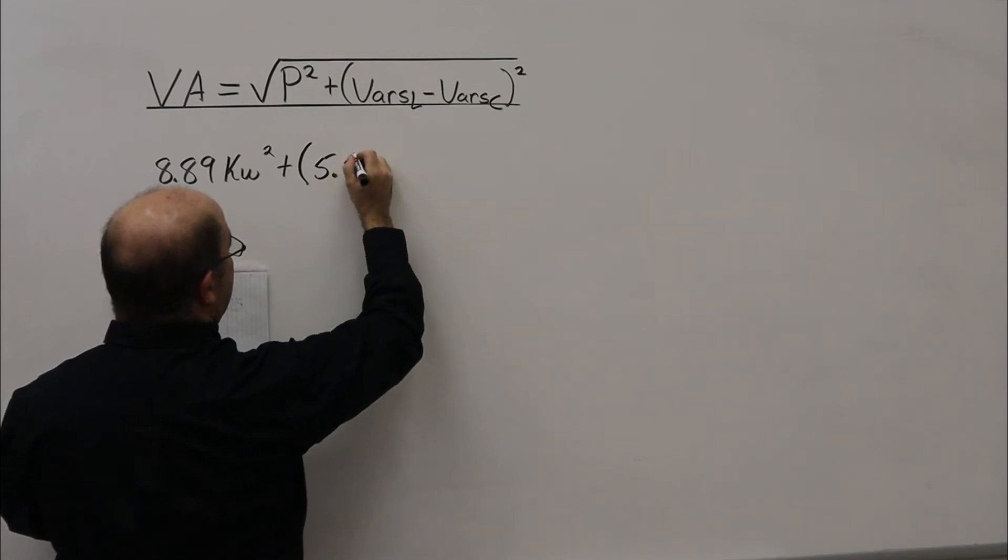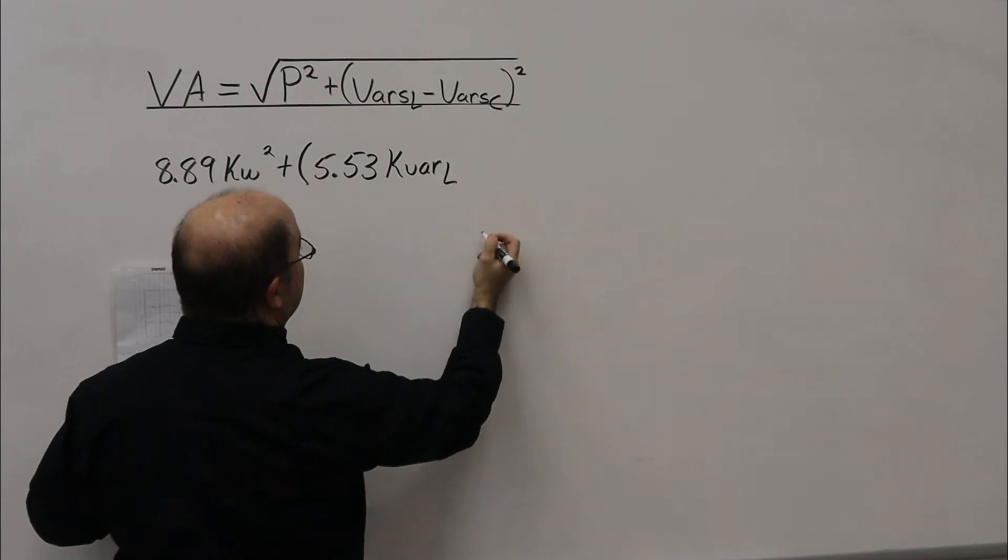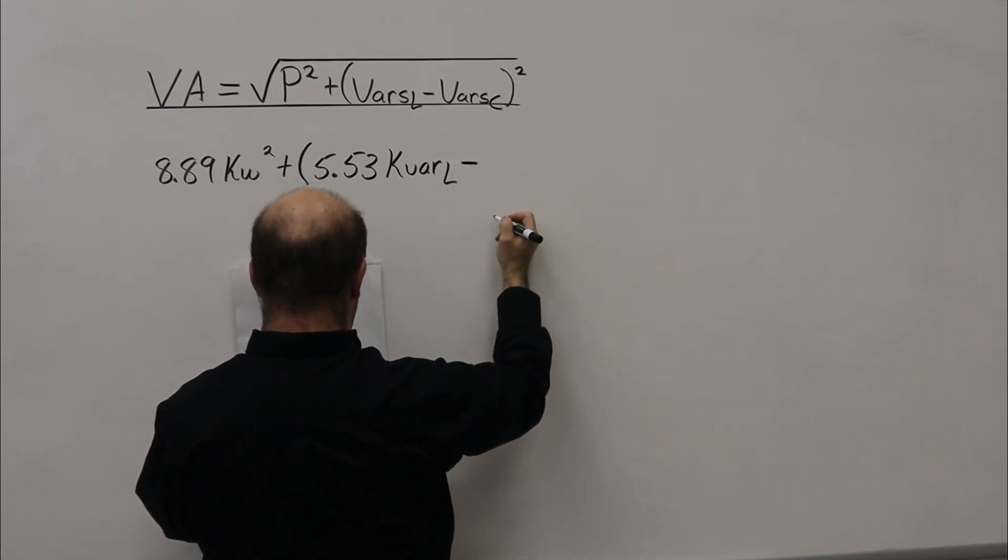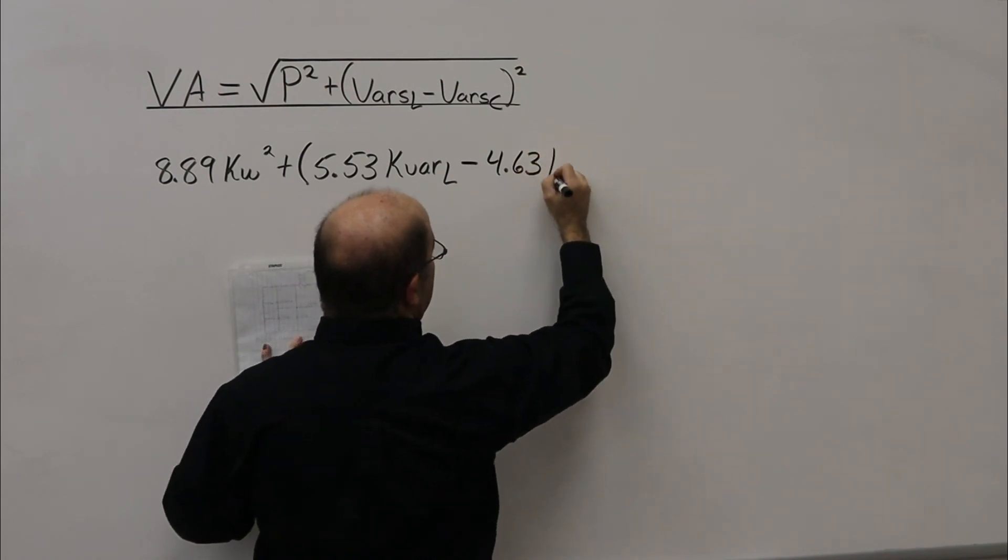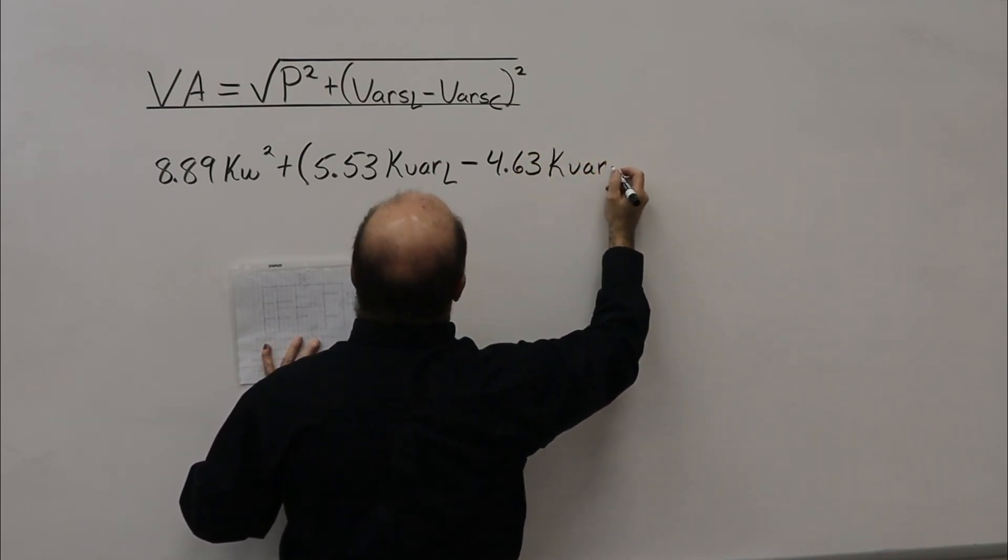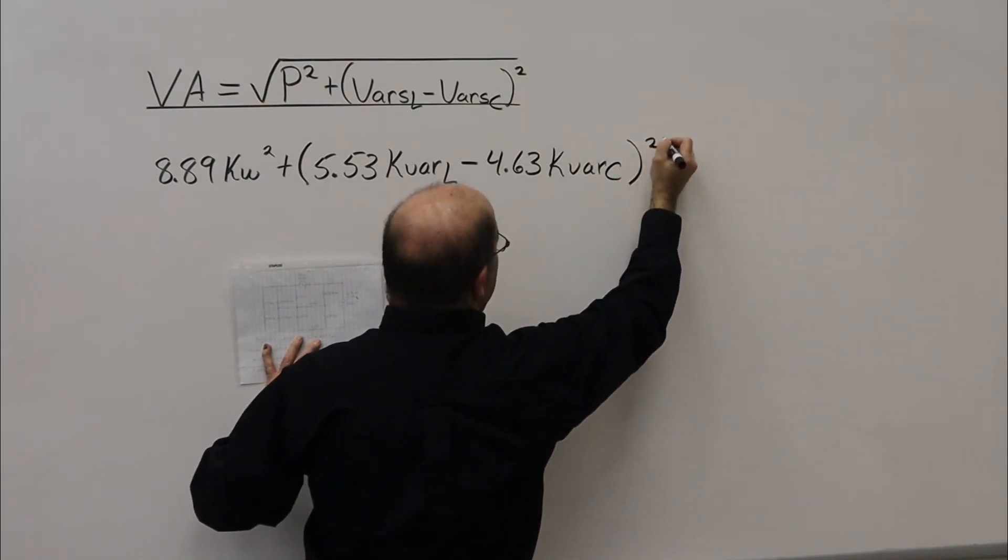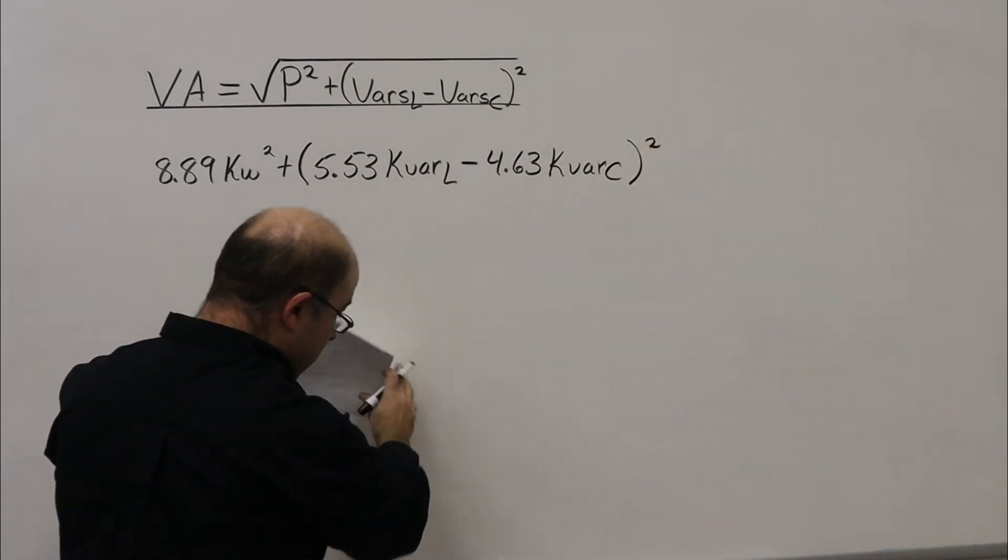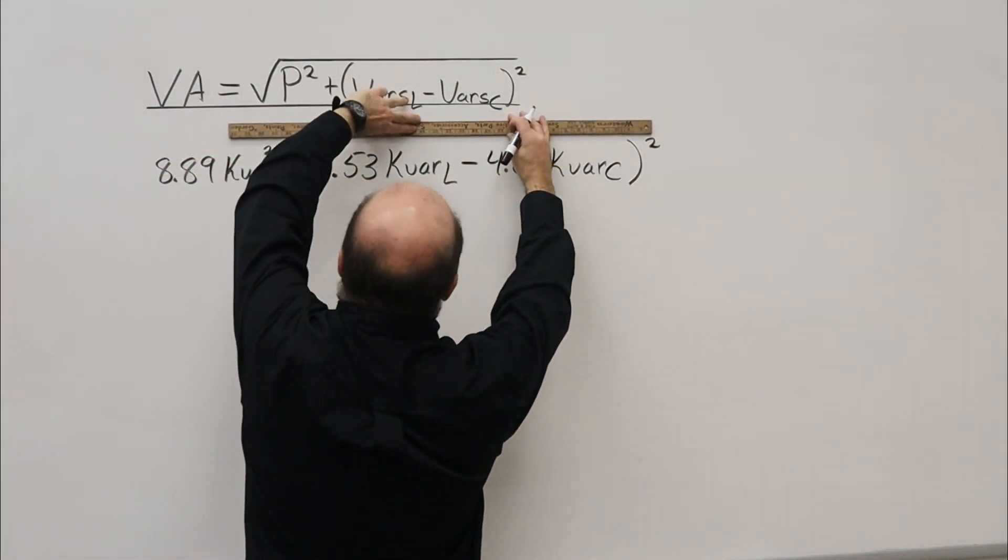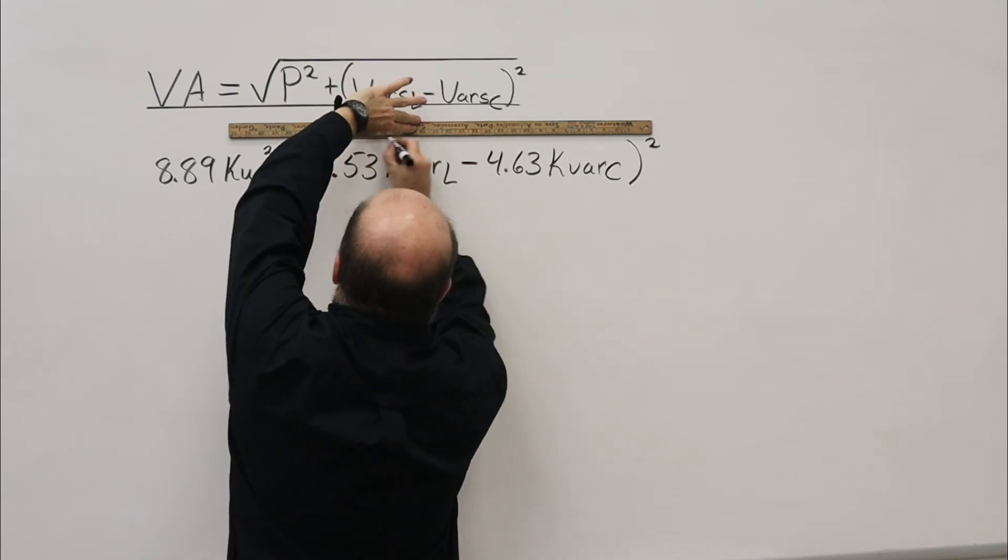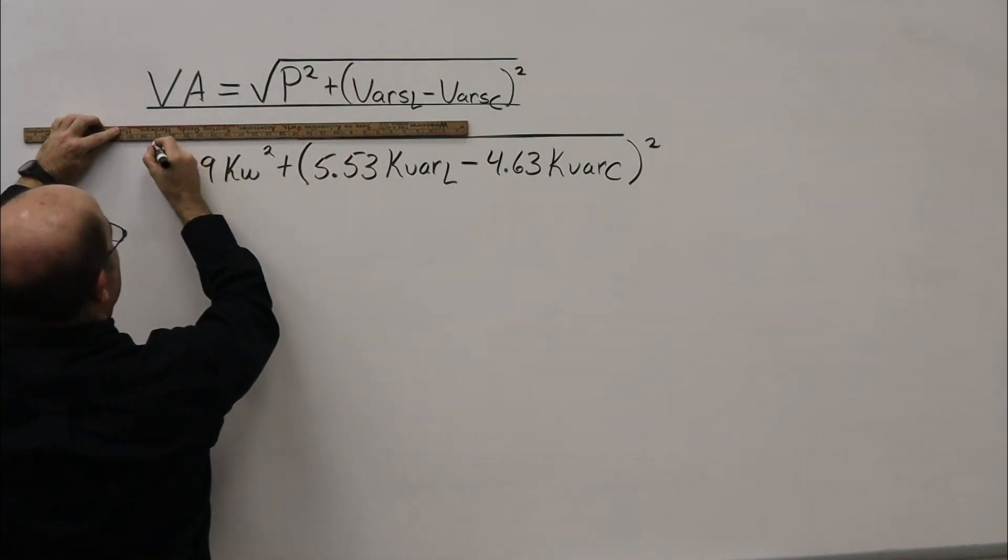5.53 kVAR inductive, subtracting 4.63 kVAR capacitive. Close the brackets and square that. Pardon me if I use a ruler here to try and make a straight line.